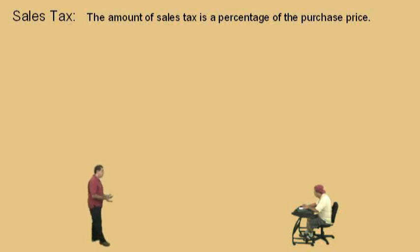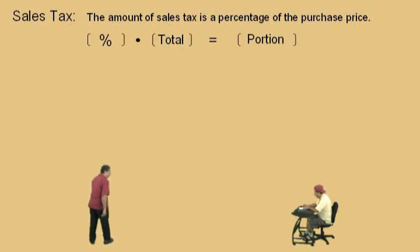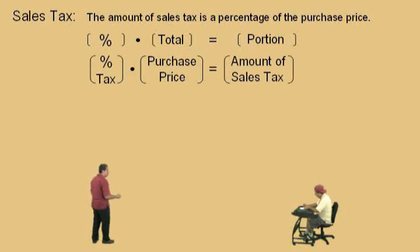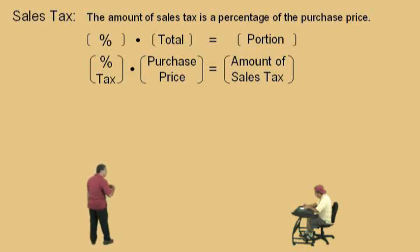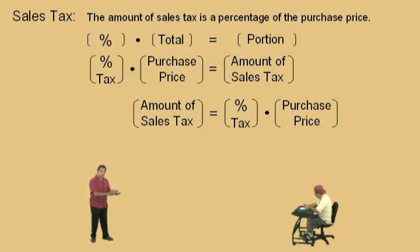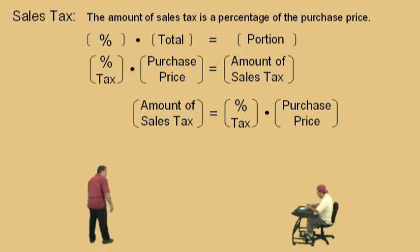And the purchase price is the price that you see on the price tag. Now let's go back to our regular format: the percent of a total is a portion. In this problem, percent is going to be percent tax times the total, which is your purchase price, and our portion is the amount of sales tax. So the amount of sales tax is simply the percent tax times the purchase price. If you know the tax rate, you just take the percent tax and multiply it by the purchase price — the price on the price tag — and that will give you the amount of sales tax.